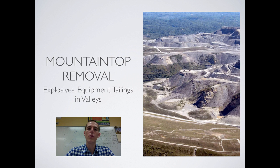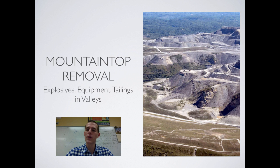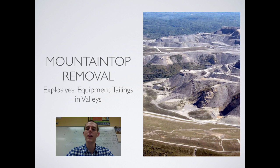Then you've got mountaintop removal, which is probably the most destructive of all the surface mining types. This is where you literally remove the top of a mountain using heavy machinery and explosives. The tailings from mountaintop removal often get dumped into valleys, which is problematic because rivers run through valleys — dumping tailings there can block up a river. One major resource searched for using mountaintop removal is coal.